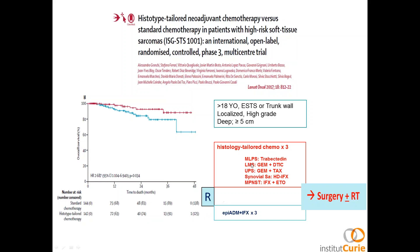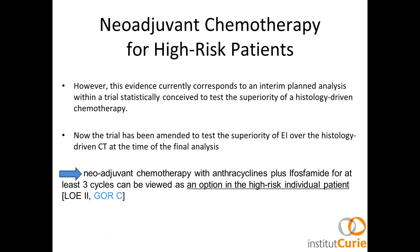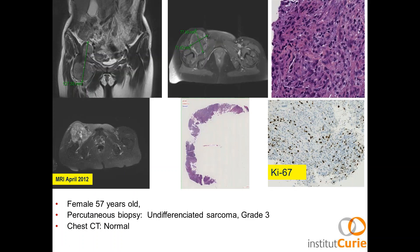The randomization was between standard chemotherapy and histology-driven chemotherapy, followed by surgery with or without radiotherapy. However, this evidence corresponds to an interim analysis within a trial statistically conceived to test superiority of histology-driven chemotherapy. With a level of evidence two and grade of recommendation C, neoadjuvant chemotherapy with anthracyclines plus ifosfamide for at least three cycles can be viewed as an option for the high-risk individual patient.